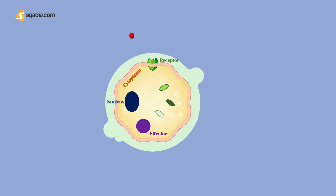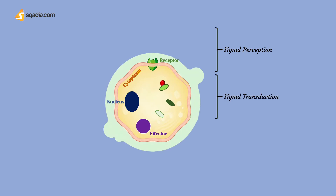The first step for cellular interactions is signal perception — that is, the binding of a ligand to a receptor present on the surface of a cell. If the ligand is a match for the receptor, it will bind and initiate a cascade of intracellular signal transduction. There are different signaling pathways through which signal transduction is initiated. These pathways are discussed in detail in another lecture. This signal transduction leads to a response from cells or effector organs.